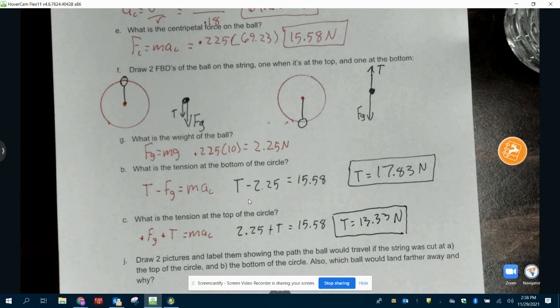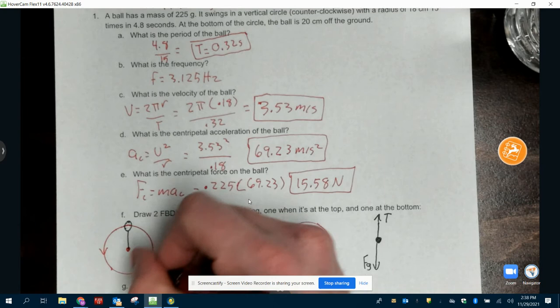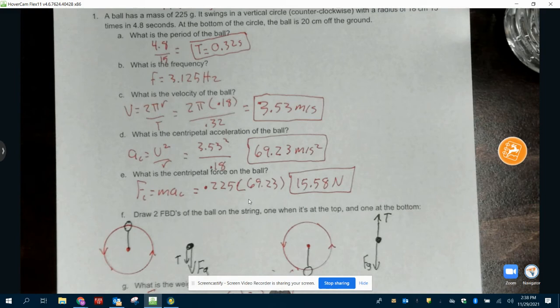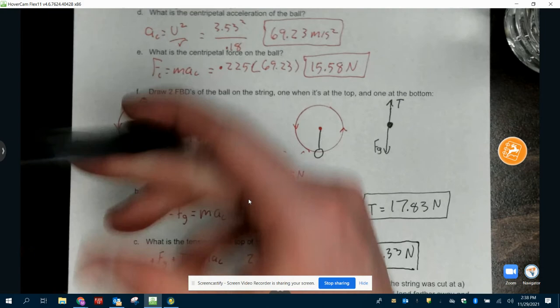For J, draw two pictures and label them, showing the path of the ball travel, if it was cut at the top of the circle or at the bottom of the circle. So what I need to know is which direction is it going. It's going counterclockwise, which means it's rotating this way. This way, this way, here. And I don't feel like redrawing the whole thing over again, so I'm just going to show which direction would this start going.